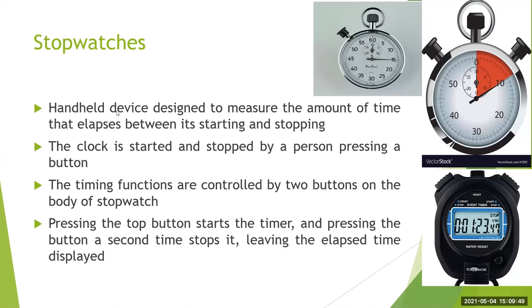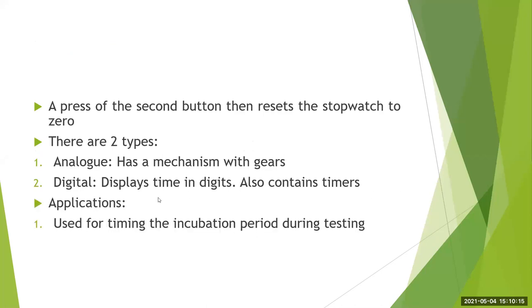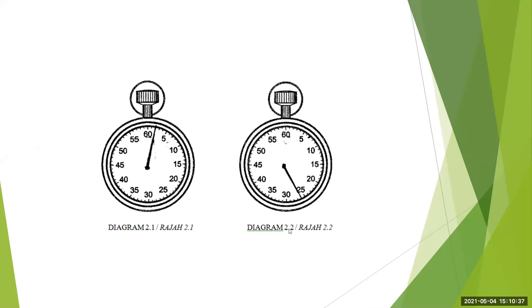In summary: a stopwatch is a handheld device — we do not keep it on the table. It records and measures the time between two points, from starting to stopping. The clock is started and stopped by pressing the same button; you press to start, press again to stop, then reset and repeat. There are two types: digital and analog. Applications include timing the incubation period during testing and timing the reaction between steps. A stopwatch can be asked as a three-mark question, so this information is more than enough. Always draw a neat labelled diagram when writing about any device or instrument.